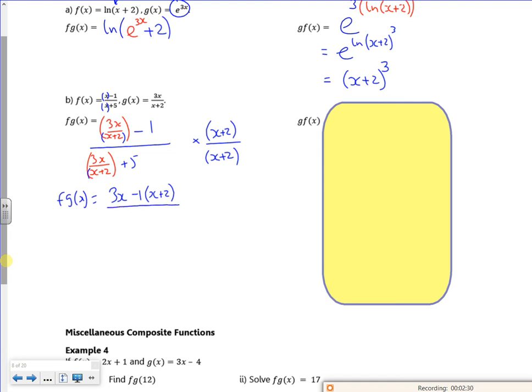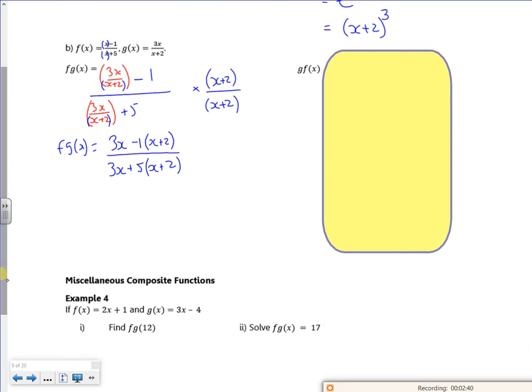On the bottom, if I multiply by it, the x plus 2 will cancel. And I've got 5 lots of x plus 2. Right, so let's have a look then. I've got 3x take x is 2x. And then I've got minus 2 on the top. I've got 3x plus 5x is 8x. And then I've got 5 times 2 is 10. Now, this will actually divide through by 2. So if I simplify it, I've got x minus 1 on the top and 4x plus 5 on the bottom.